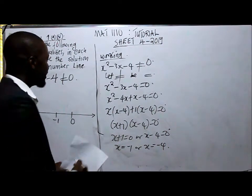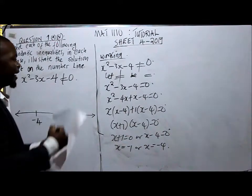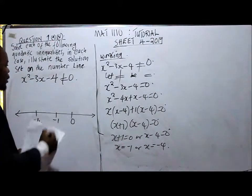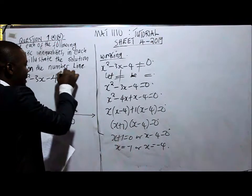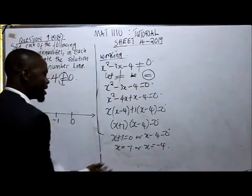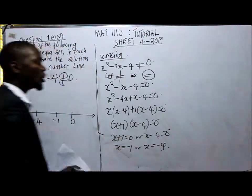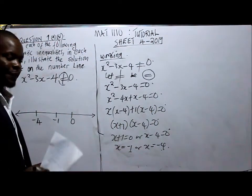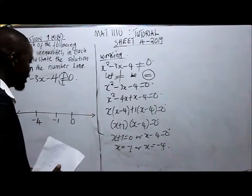Now the equation, the original equation, is an inequality equation. The sign which we have here is not equal to. But we said let it be equal to. So it means that these are not our solution set. Now let's check the solution set.